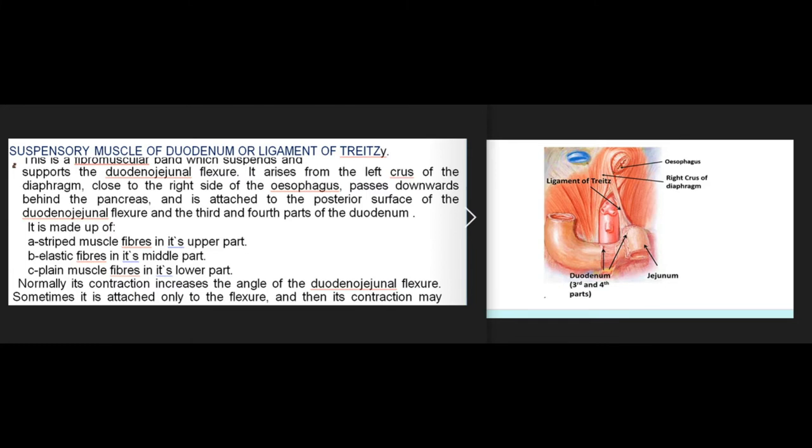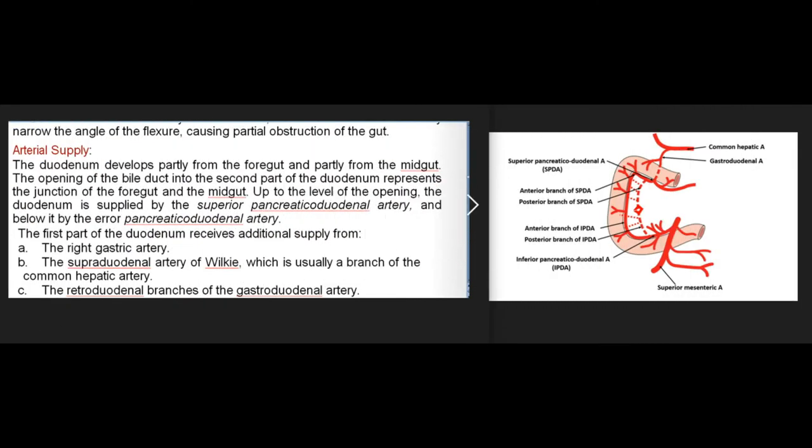The suspensory muscle of the duodenum, or ligament of Treitz, is a fibromuscular band which suspends and supports the duodenojejunal flexure. It arises from the left crus of the diaphragm close to the right side of the esophagus, passes downwards behind the pancreas, and is attached to the posterior surface of the duodenojejunal flexure and the third and fourth parts of the duodenum. It is made up of striated muscle fibers in its upper part, elastic fibers in its middle part, and plain muscle fibers in its lower part. Its contraction normally increases the angle of the duodenojejunal flexure.